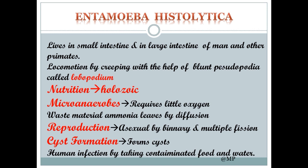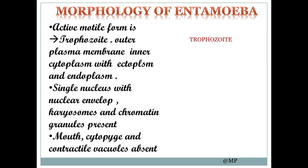Reproduction is by asexual method — by binary fission or by multiplication — and it forms the cyst. Human infection takes place by ingesting contaminated food and water.